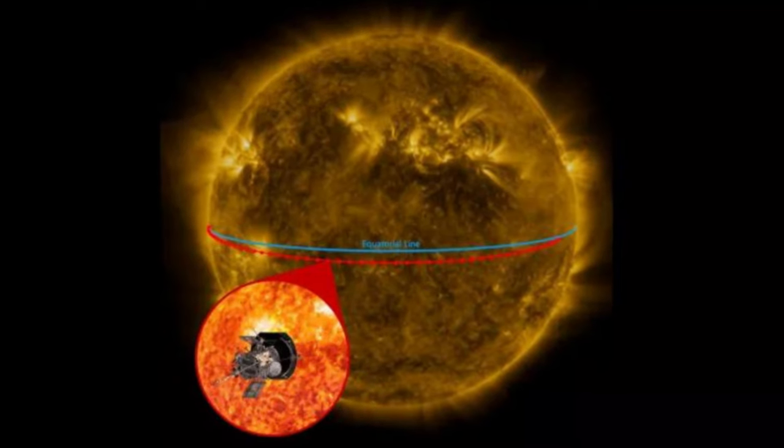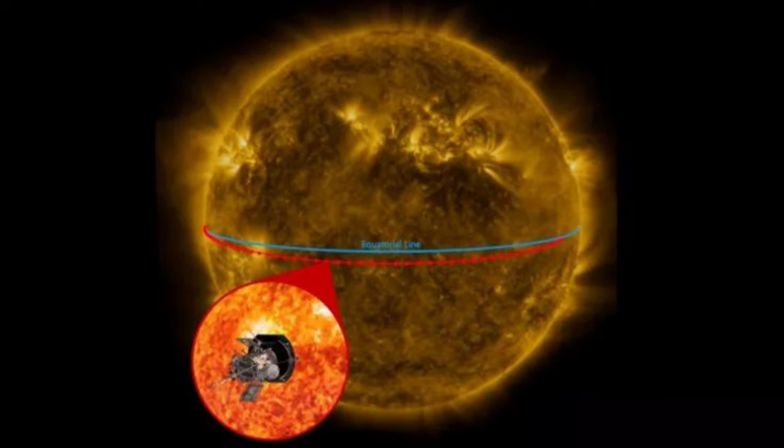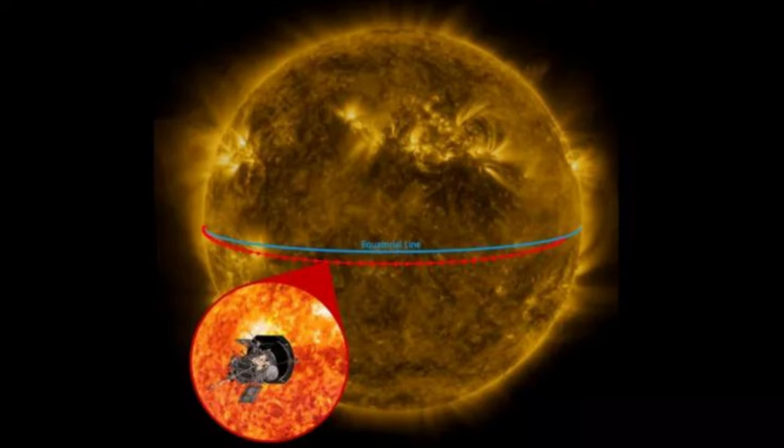To be clear, the Parker Solar Probe wasn't directly visible in the various instruments, as the van-sized spacecraft was too small for the telescopes to pick out.